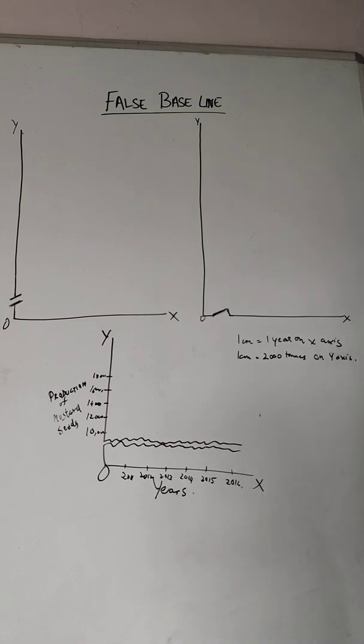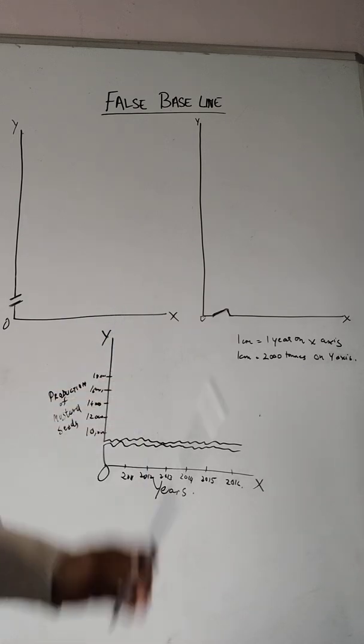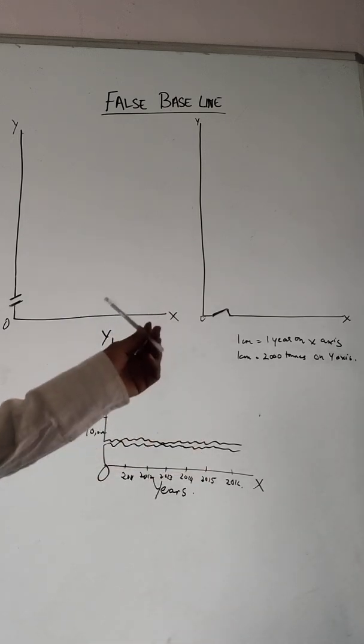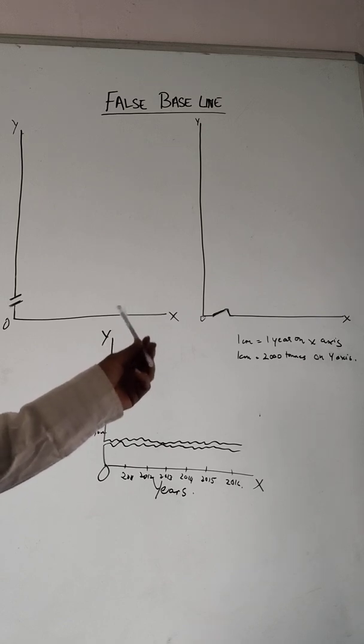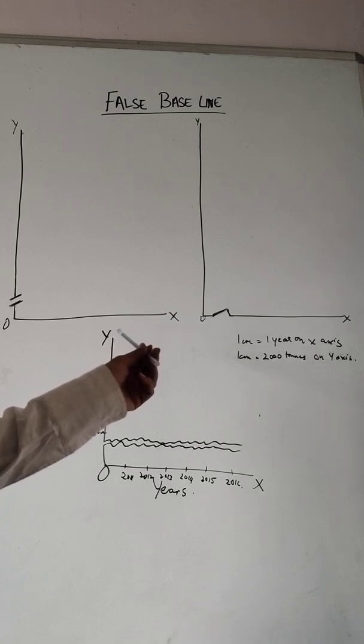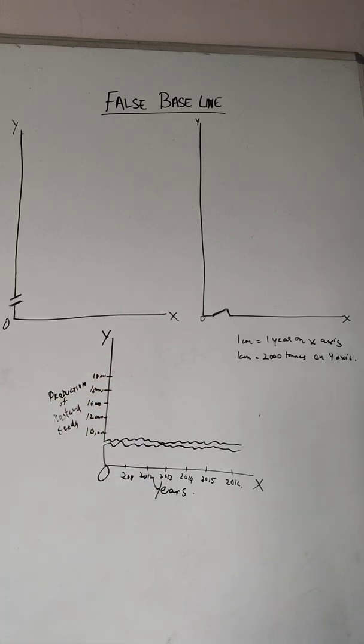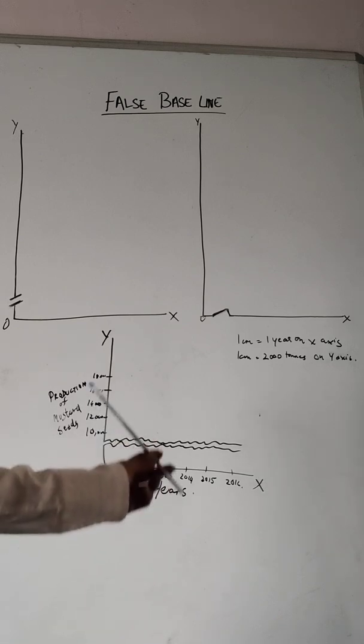As we mentioned earlier, the basic rule in constructing graphs is that the scale on the y-axis should start with zero. If the gap between zero and the smaller value is large and this rule is strictly followed, the curve will look very much pulled away from the point of origin.